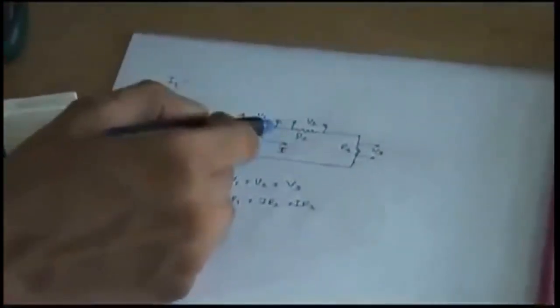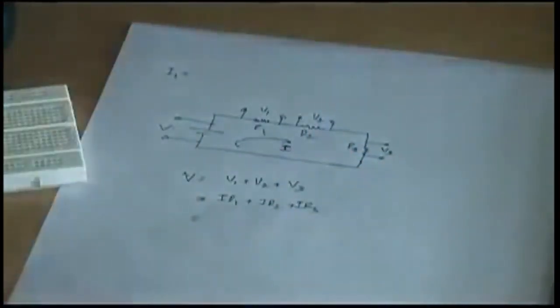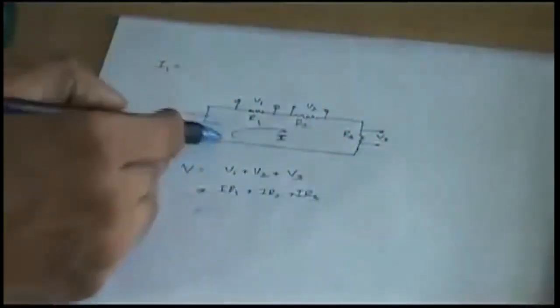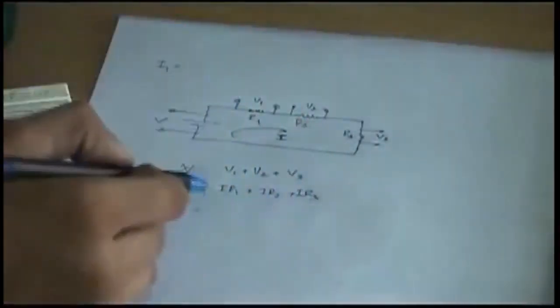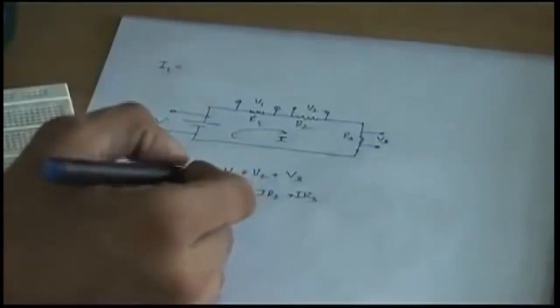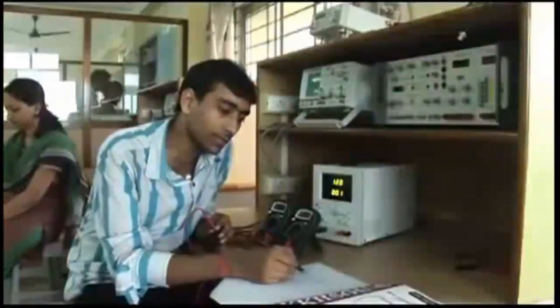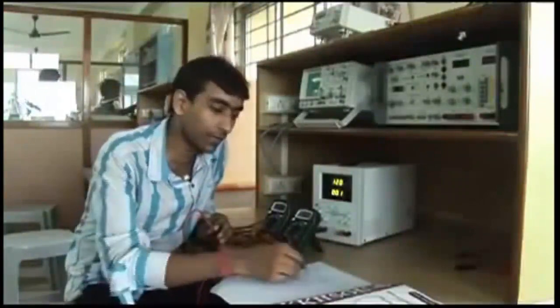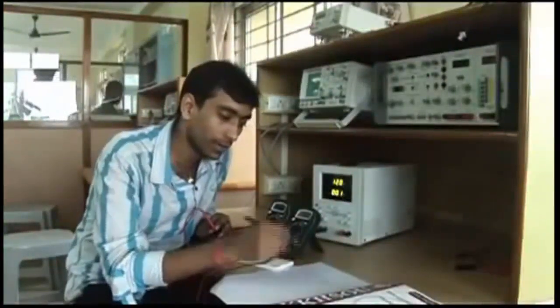Let me explain this on the page. For this circuit with voltage source and resistors R1, R2, R3, KVL states that V equals V1 plus V2 plus V3. Since the current is the same throughout a series circuit, V1 equals I times R1, V2 equals I times R2, and V3 equals I times R3 — this follows directly from Ohm's law. The current I flows through the entire loop.